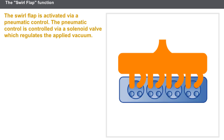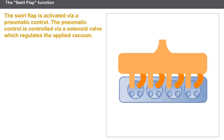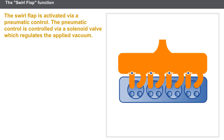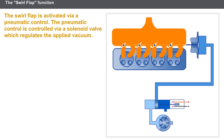On engines equipped with swirl flaps, each cylinder is supplied with air via two valves each connected to an inlet tract: a rectilinear tract and a helical tract. The swirl flap is fitted inside the rectilinear tract. The flap is activated via a pneumatic control. The pneumatic control is controlled via a solenoid valve, which regulates the applied vacuum.